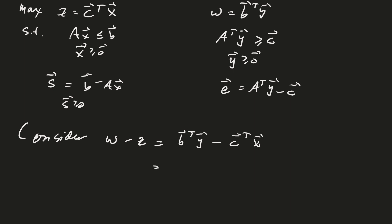Now I'm going to do a little trick. I'm going to use this equation and substitute in for b, and then I'm going to use this equation and substitute in for c. So for b, I'm going to have Ax plus s transpose times y, minus now for c I'm going to have A transpose y minus e transpose times x.